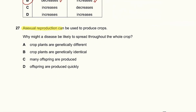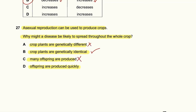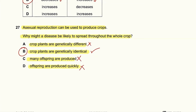Question 27: Asexual reproduction can be used to produce a crop. Why might a disease be likely to spread throughout the whole crop? Asexual reproduction produces genetically identical plants, so the crop plants are genetically identical — that is the main reason why a disease can spread throughout the crop. So 27B is the answer.